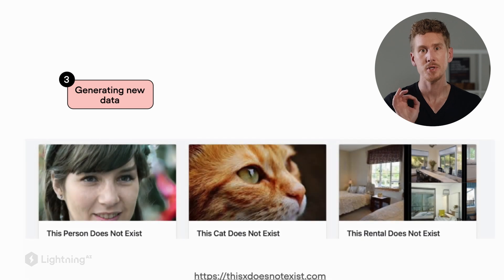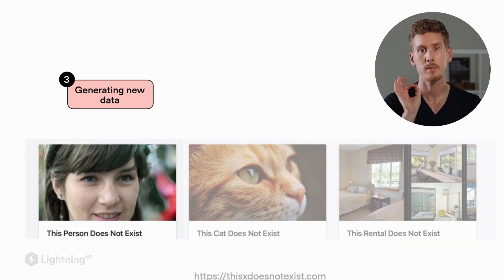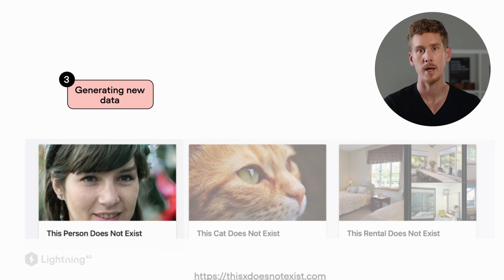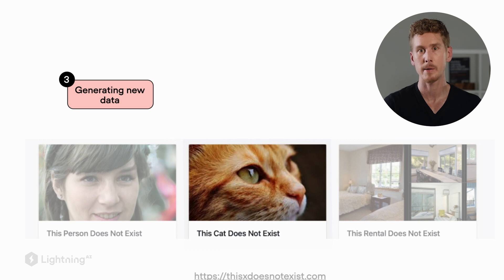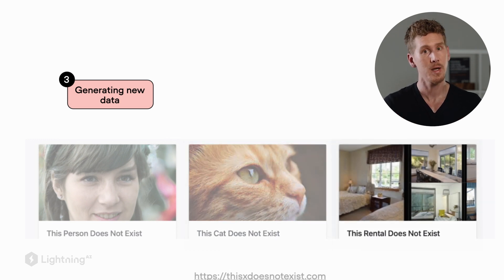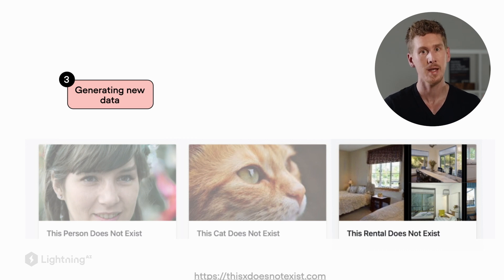What we can see here are images that were created by machine learning. On the left-hand side, we see an image of a person. However, this person does not exist in real life — this image is completely generated by a machine learning algorithm. Similarly, the cat in the center is a cat that does not exist in real life; it's something that the machine learning algorithm synthesized. And on the right-hand side, the apartments are entirely created by machine learning. These apartments are not real apartments — they are entirely generated.